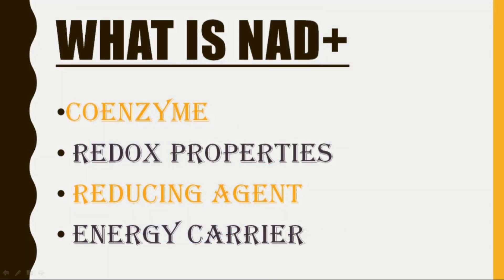Coming back to NAD, it has redox properties, meaning that it can reduce itself and also oxidize itself. You can see the positive sign with NAD — this sign shows that it is already in its oxidized state. When the molecule is already in its oxidized state, it means it needs to get reduced. And when it gets reduced, it gains a hydrogen ion and becomes NADH.